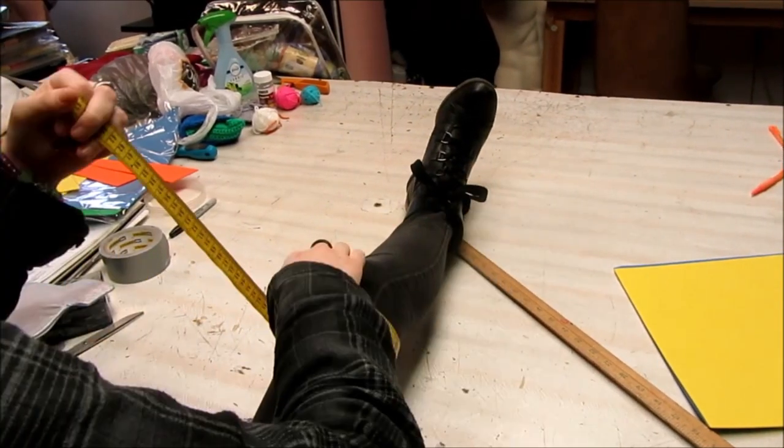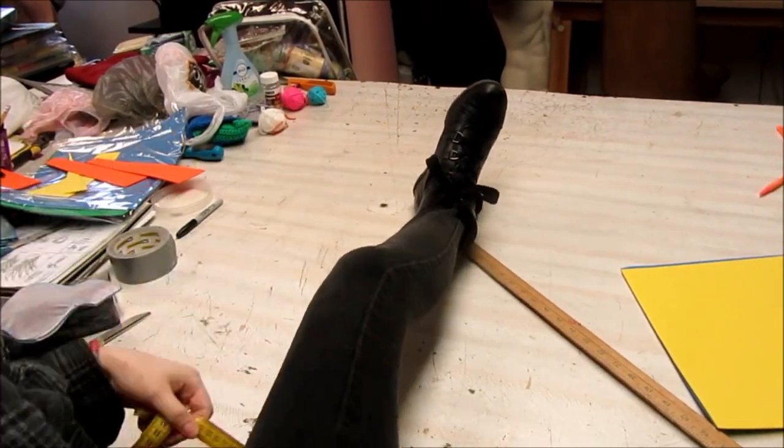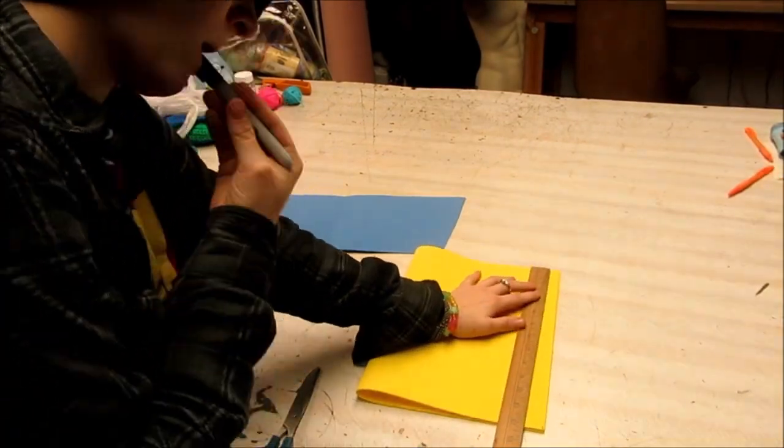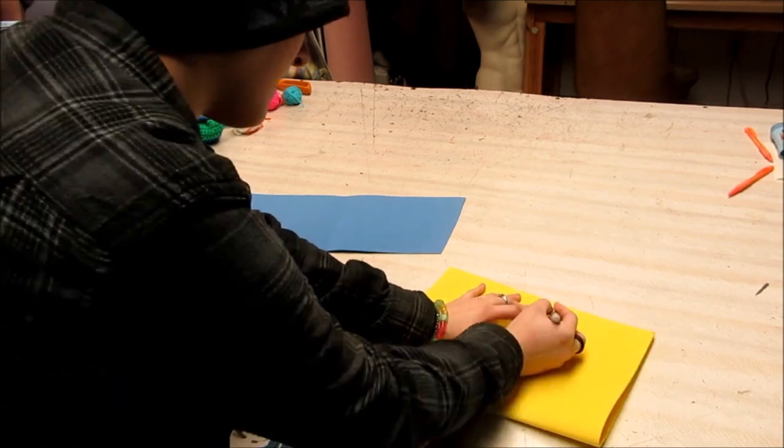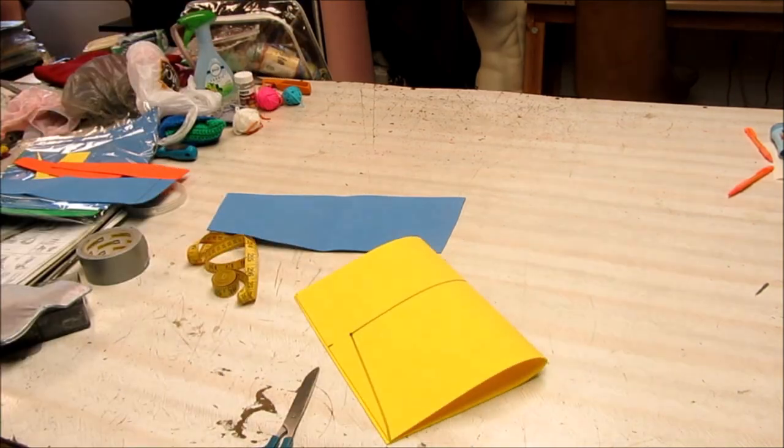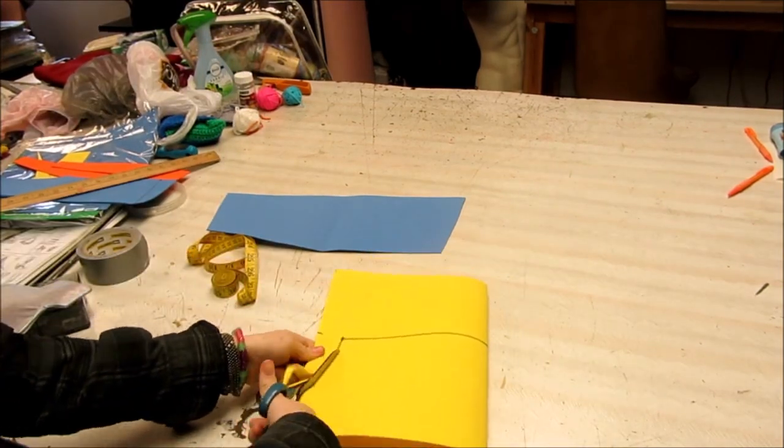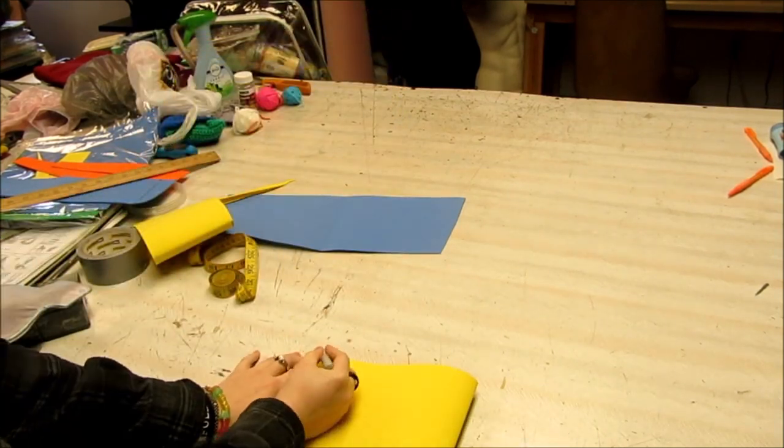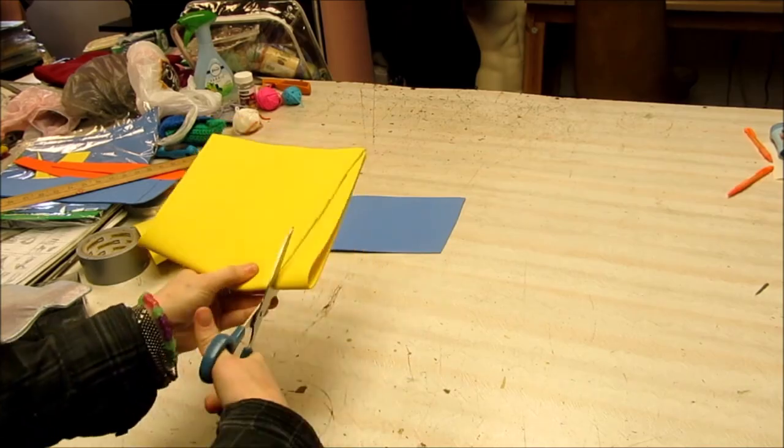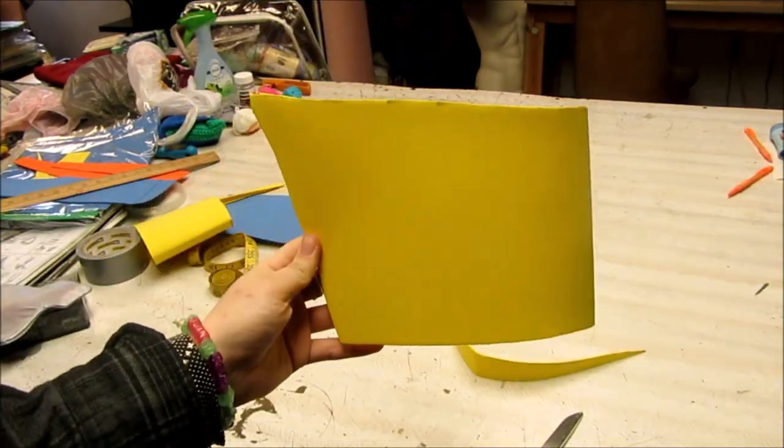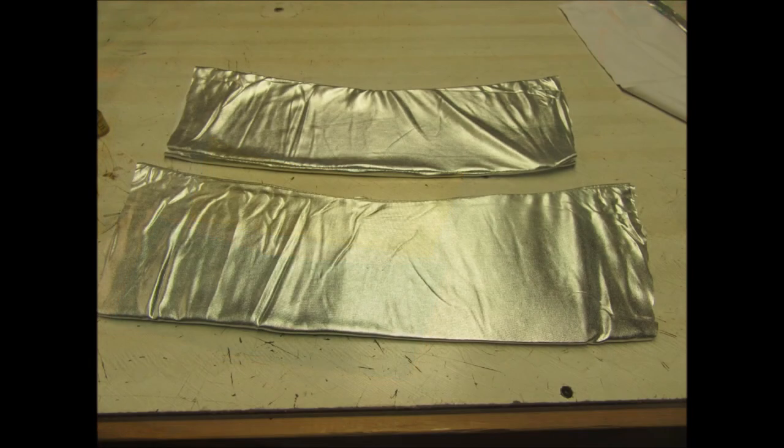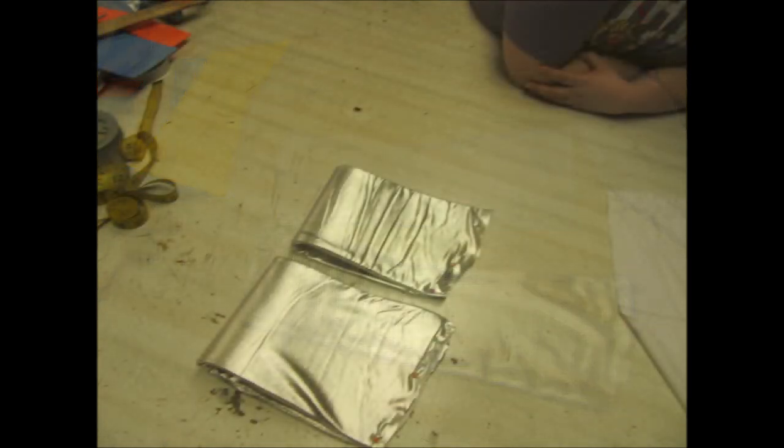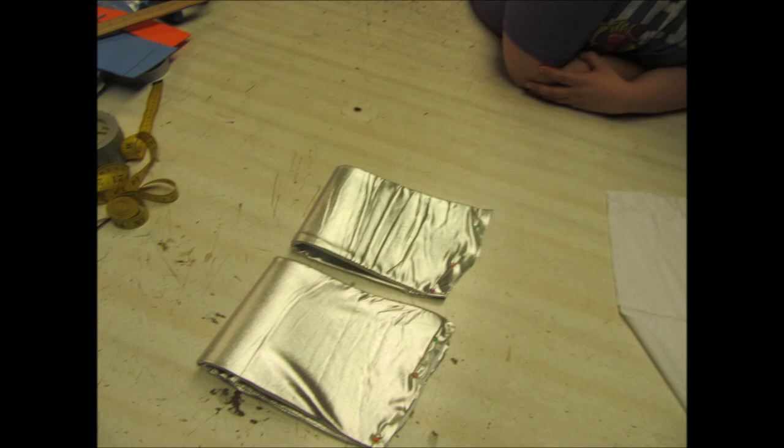For the thighs, I measure just above my knee, my upper thigh, and the length I want the piece to be. Then I simply transfer those dimensions onto my foam. I cut mine on a fold for more accuracy and then trim along the top to give it a more dynamic shape. After that, I cover my thigh plates in the plain silver fabric so the knee plate will stand out a little more. Then I just seam them up the back and turn them out.